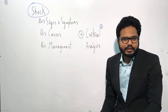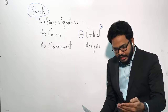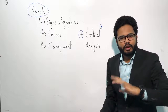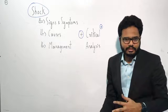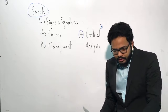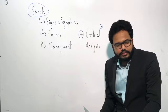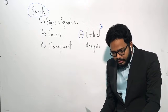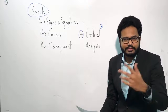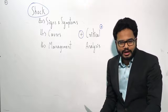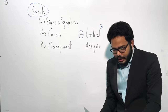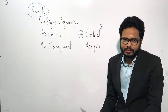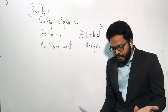Coming to the treatment aspect, we have a protocol — P, A, B, C, D, E, F — but remember, this protocol doesn't remain the same for all kinds of emergencies; it varies. Starting with P, that is positioning: place the patient in supine position, lower the head slightly, and elevate the legs. In case of pregnant women, you have to roll the patient onto the left side and assess consciousness.